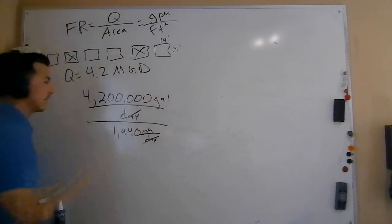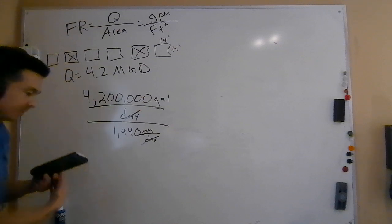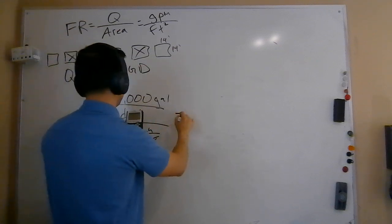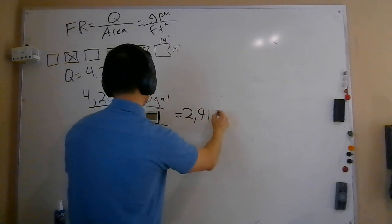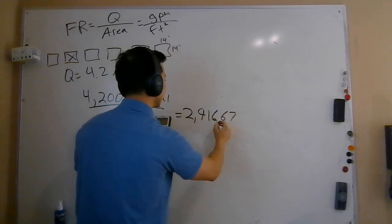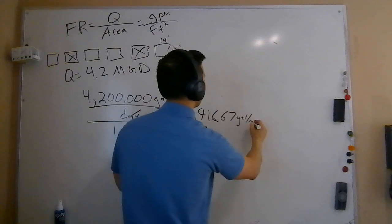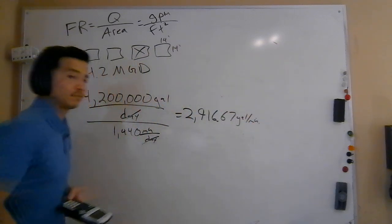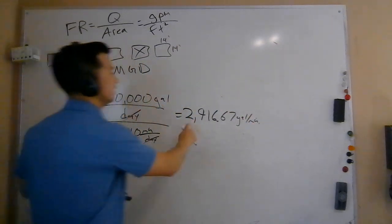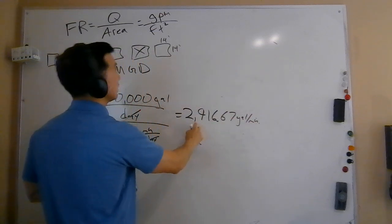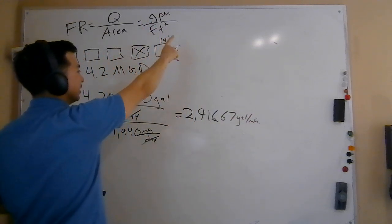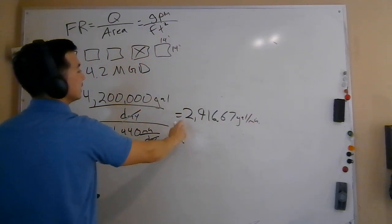This is going to allow me to cancel out my days. So I'm going to take this 4.2 million number, 4,200,000 divided by 1,440. And that's going to get me to a flow rate of 2,916.67 gallons per minute. Now I'm just going to leave this number in my calculator for the sake of ease, but this now becomes my flow rate. And this is what I need in GPM.